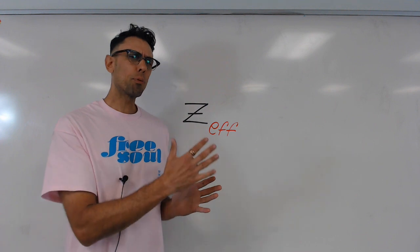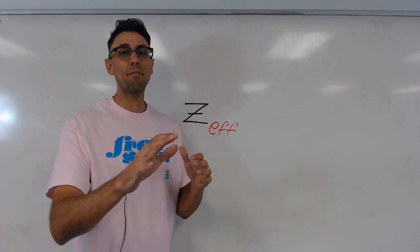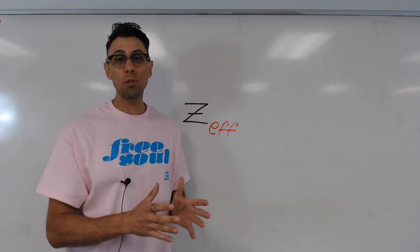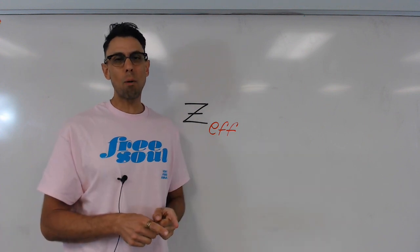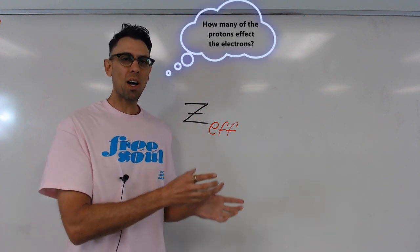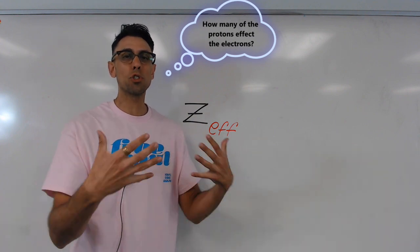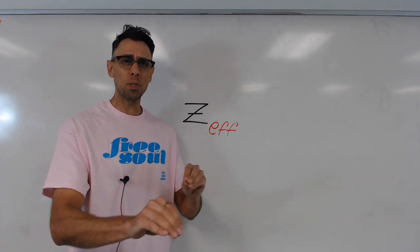So basically, effective nuclear charge is the following. It's the number of protons in the nucleus that actually have an effect on the rest of the atom. Well, the rest of the atom are the electrons. So in this concept, we're going to be thinking about how many of the protons in the nucleus actually affect the electrons surrounding the nucleus in an atom.